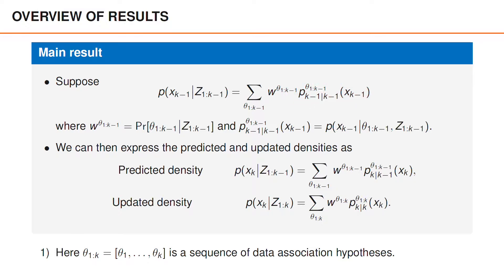Here, theta_{1:k-1} denotes the sequence of hypotheses up to time k-1, and both the weight and the density are functions of that sequence. For the density p, we use sub-indices k-1 given k-1, which indicates that we are expressing the density of x at time k-1 based on measurements up to time k-1.